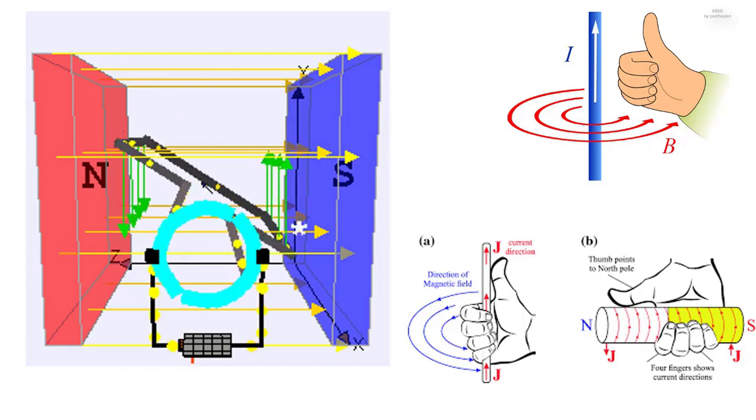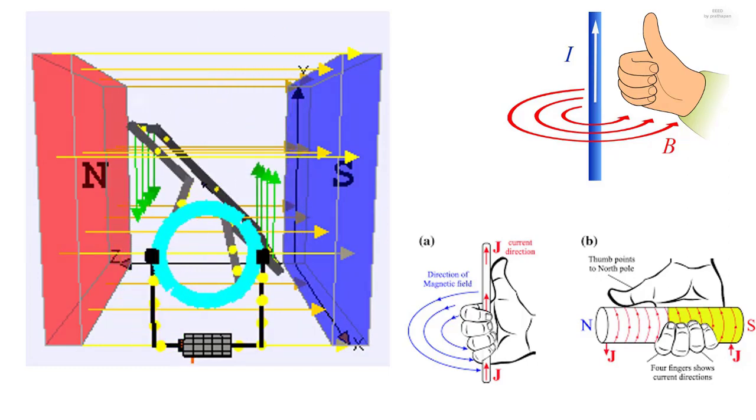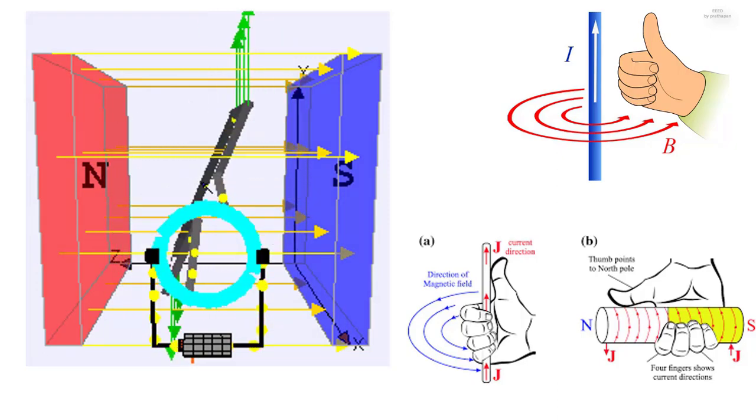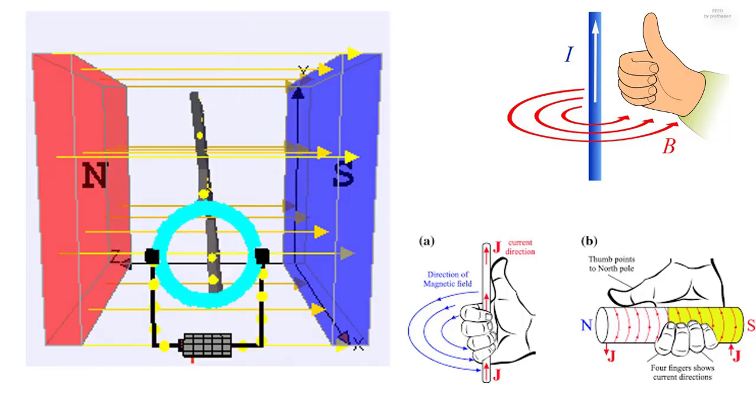The electric motor is then constructed so that the expulsion of the conductor out of the magnetic field causes it to be placed inside the next magnetic field, and for this switching to be continued indefinitely.